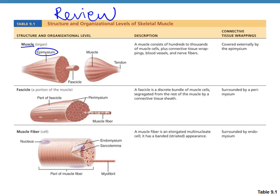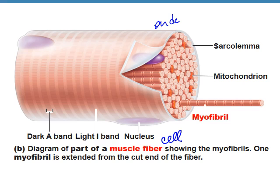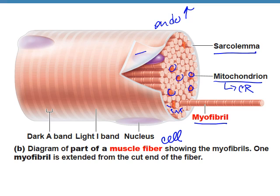Let's review: the muscle is wrapped in epimysium, we pull out a fascicle wrapped in perimysium, then we have the muscle fiber cell wrapped in endomysium. The next layer is the sarcolemma — the muscle fiber plasma membrane. Inside the muscle fiber cell, you have myofibrils — there could be hundreds to thousands of myofibrils within one muscle fiber cell. You can also see mitochondria — lots of them, because this is the site of cellular respiration, turning glucose energy into ATP for movement.